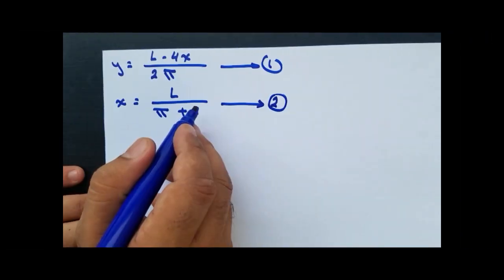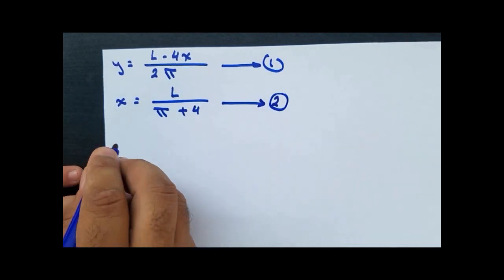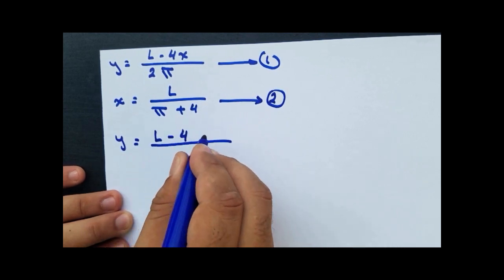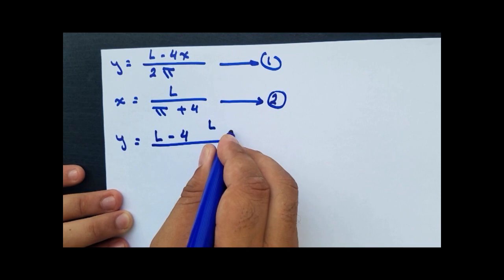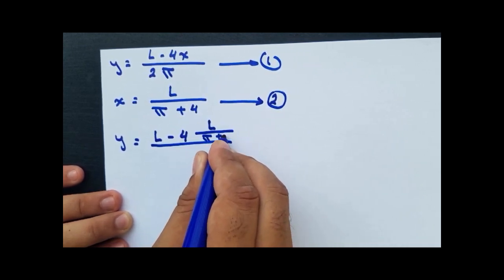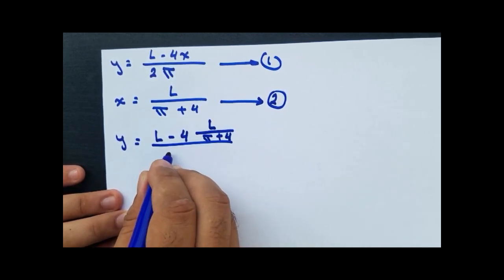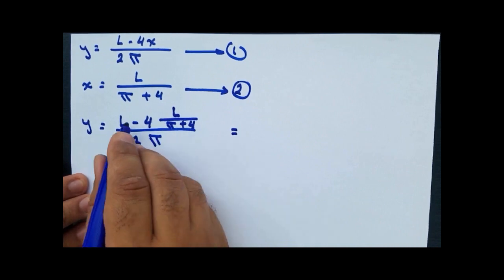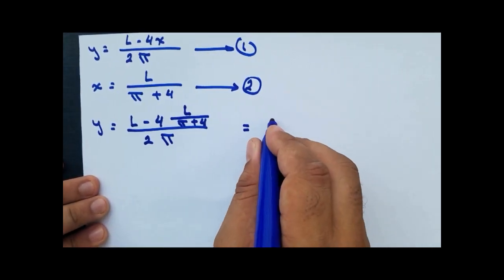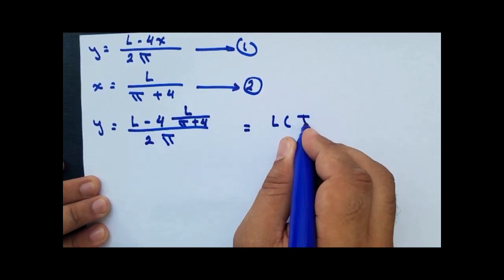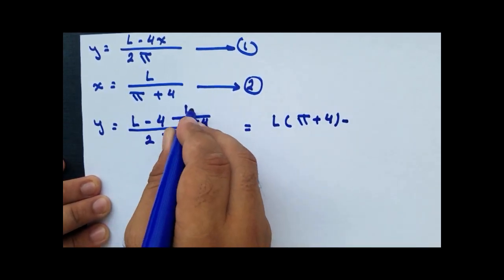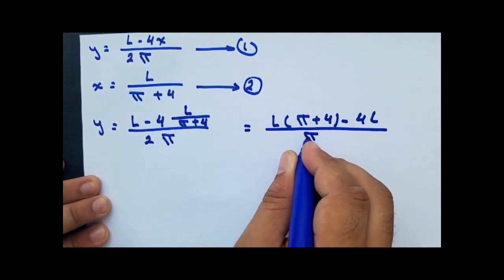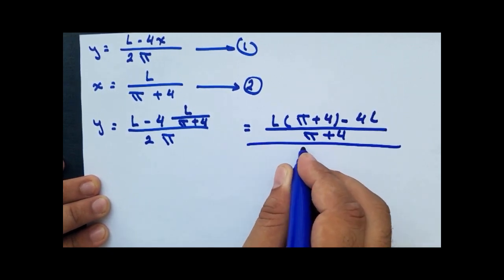Now we substitute the value of x from equation 2 into equation 1, and we find that y equals L minus 4 multiplied by L over (π plus 4), all over 2π. We find the common denominator: L times (π plus 4) minus 4L, all over (π plus 4), then divided by 2π.